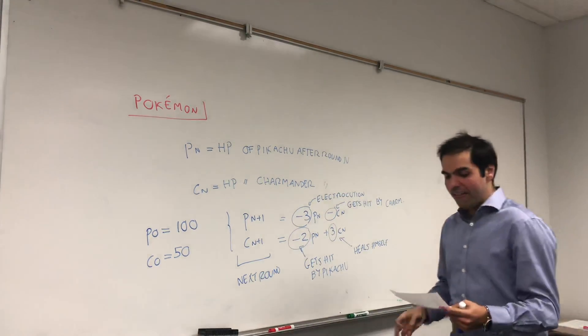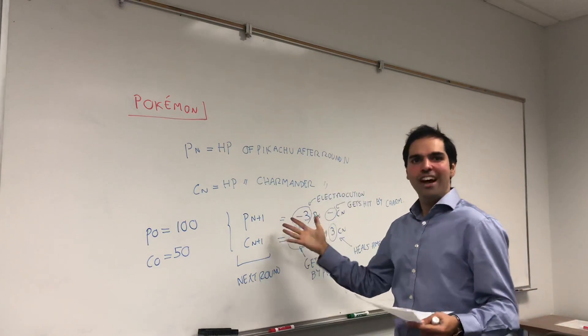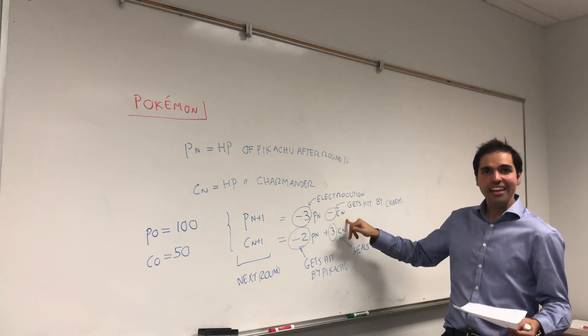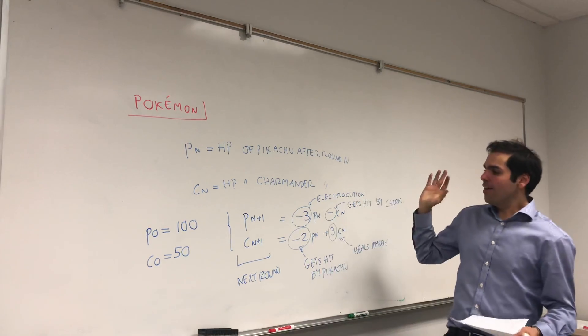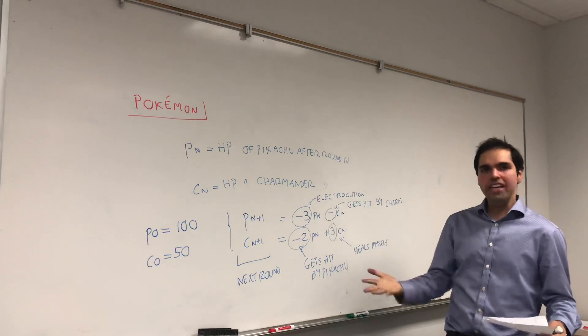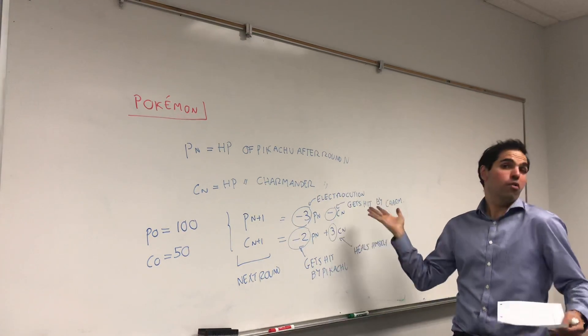And the question is, first of all, the reason I'm doing this is we want to find actually an explicit formula for PN and CN. And we can actually do this even though it's a complicated system. Moreover, we want to ask ourselves, who loses first? Will Pikachu lose first? Or will Charmander lose first? Or both? We'll see.